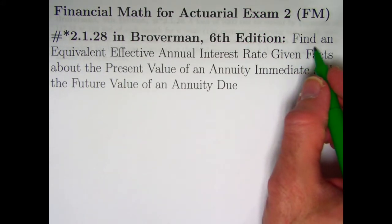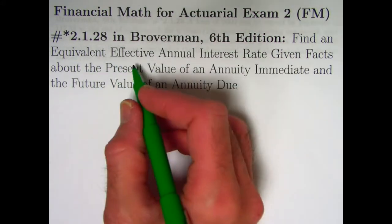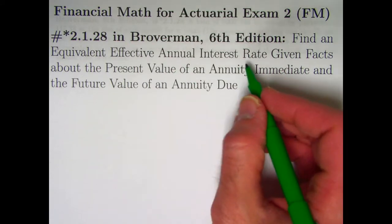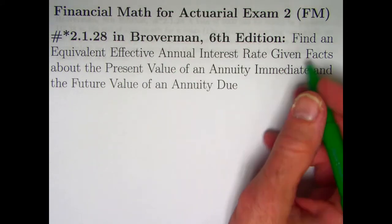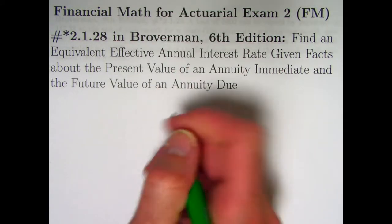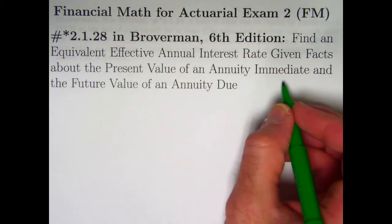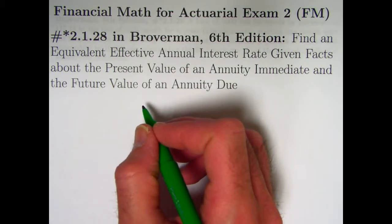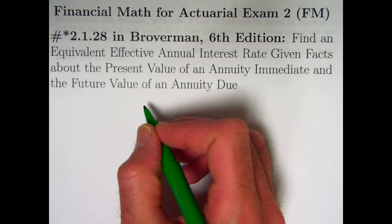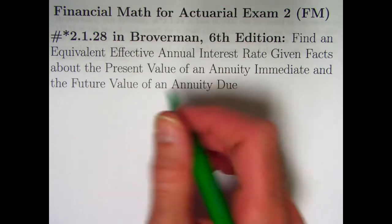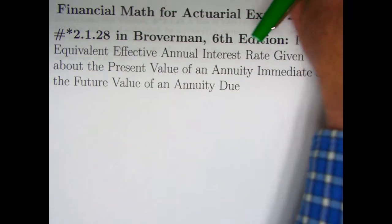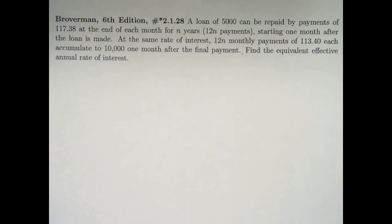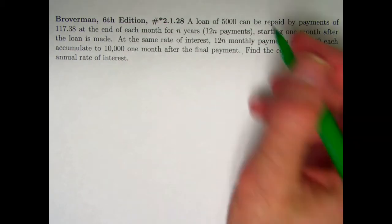We're going to find an equivalent effective annual interest rate when we're given a couple of facts about the present value of an annuity immediate and the future value of an annuity due. This is video number 39 — you may want to watch videos 37 and 38 if the idea of an annuity due is unfamiliar to you.